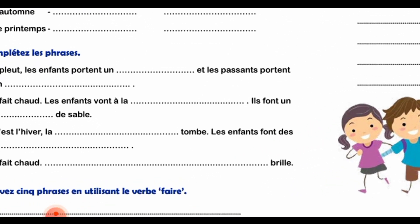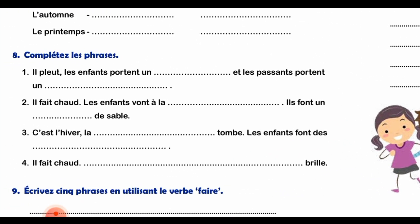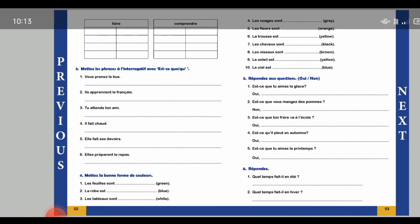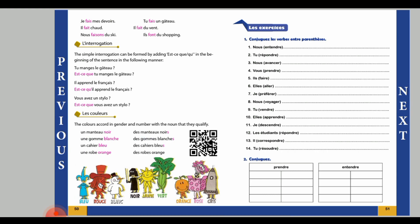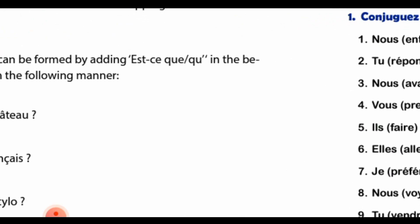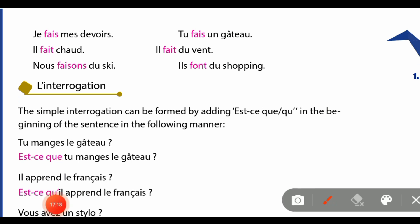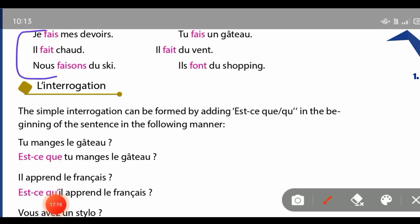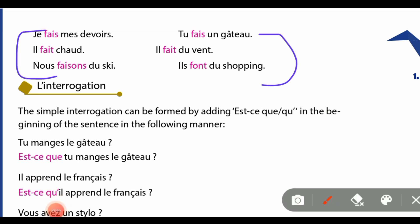Question number 9 says you have to write five phrases using the verb 'faire' - five sentences that are conjugated using 'faire'. There are six sentences given here - you can note down any five of them.